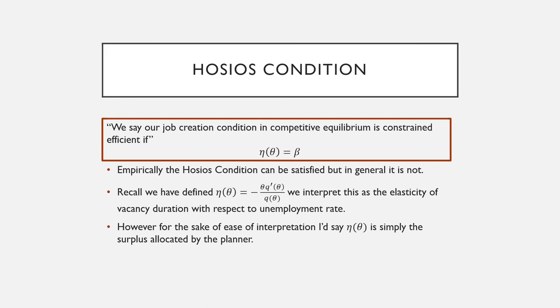So till now I haven't really gone into what η(θ) is. We just defined it as minus theta times Q prime all over Q theta. We interpret this as the elasticity of vacancy duration with respect to the unemployment rate.